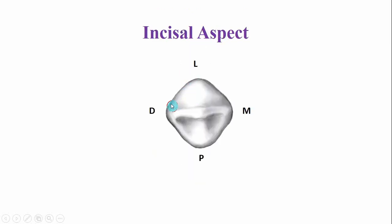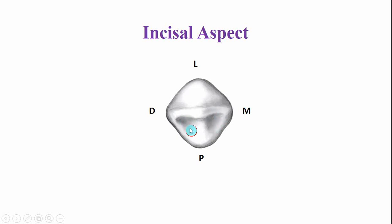This is the incisal aspect. From the incisal aspect, the shape of the crown is diamond in shape. The cusp tip is slightly offset towards the distal side because the mesial cusp slope is larger. This is the cingulum, usually present in the center but sometimes slightly offset towards the distal side. This is the palatal ridge, and it divides the lingual fossa into the mesiopalatal fossa and the distopalatal fossa.